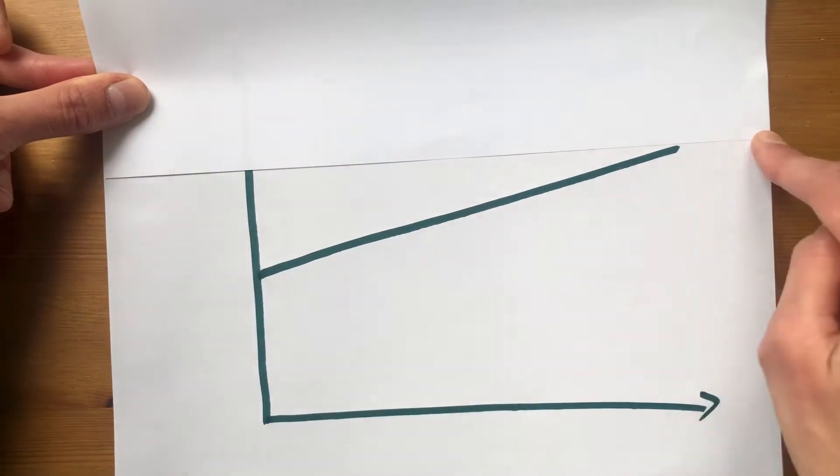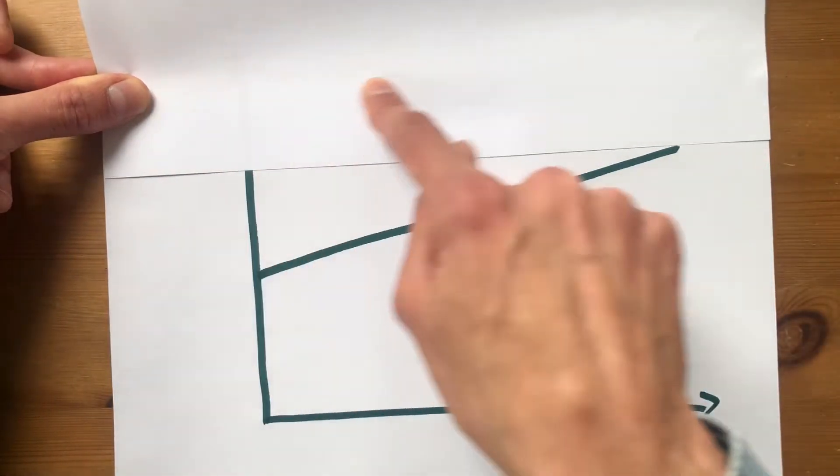So what this piece of paper represents is the input impedance roughly of a guitar tube amplifier. As you can see it's fixed, it doesn't vary, and you can see it's also a very high impedance device.